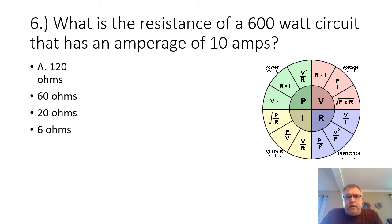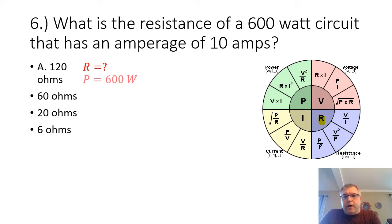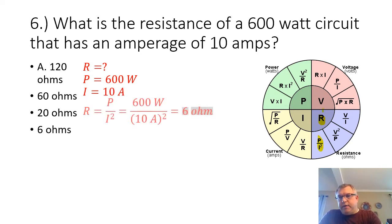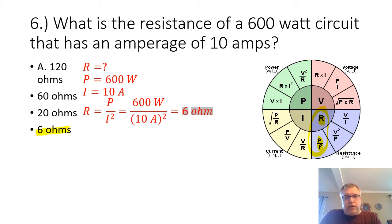Problem six: what is the resistance of a 600-watt circuit that has an amperage of 10 amps? We're looking for the resistance. We are given the power at 600 watts and the current at 10 amps. Our formula is R equals P divided by I squared. 600 watts divided by 10 amps squared equals 6 ohms.